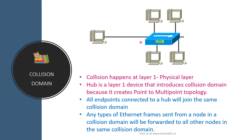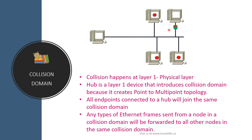If you look inside a hub, it actually connects the devices like this. Therefore all endpoints connected to a hub will join the same collision domain. Any types of ethernet frames sent from a node in a collision domain will be forwarded to all other nodes, causing a collision because two hosts send frames on the wire at the same time.